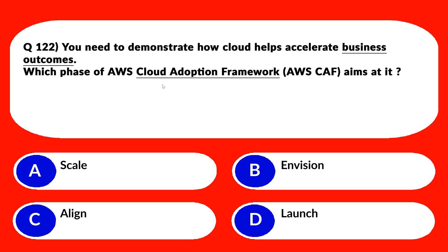This question is about the AWS Cloud Adoption Framework, also known as CAF — we've encountered similar questions before. Option A says 'Scale' — Scale focuses on optimizing and expanding cloud capabilities, which is not the correct choice here. Option C says 'Align' — Align focuses on aligning business and technology strategies, which is again out of context as per the question.